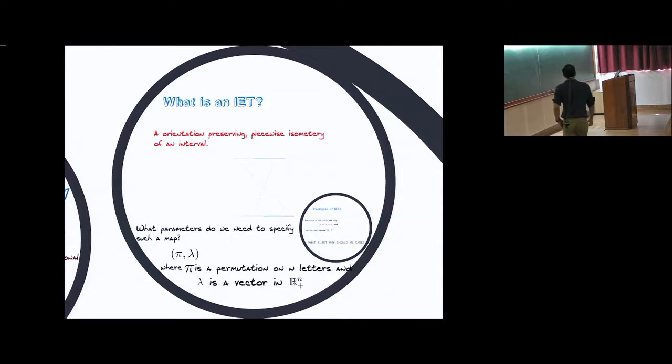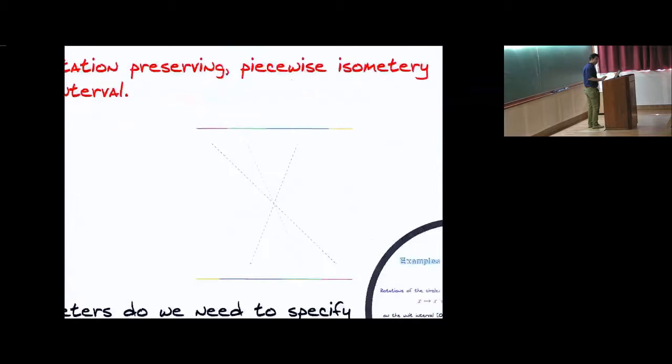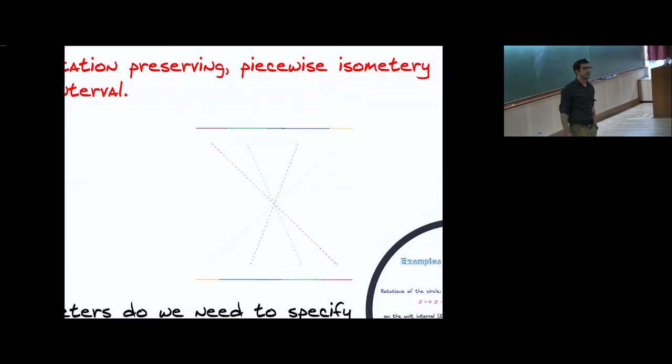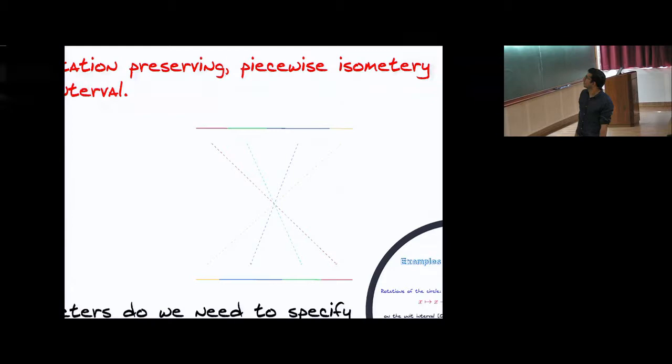This is a map of a unit interval to itself — a piecewise isometry. It's mapping one piece down to another. You can see an example of an interval exchange map: the piece on the right goes to the piece on the bottom right and so on. This is four intervals and the permutation 4, 3, 2, 1. The first interval becomes the fourth, the second interval becomes the third, the third becomes the second, and the fourth becomes the first.